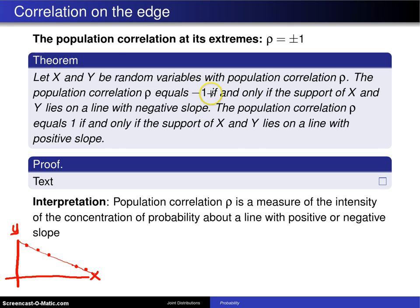The population correlation rho equals positive 1 if and only if the support of x and y lies on a line with positive slope.